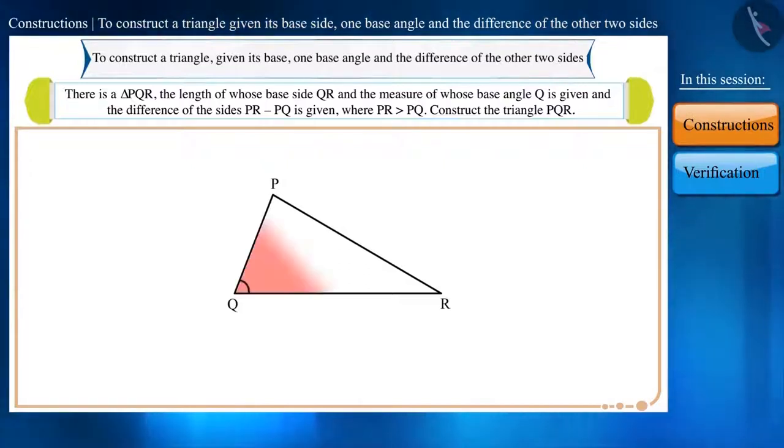Friends, here you can see that side PQ formed on the base angle Q is smaller than the side PR. This is the difference between Case 1 and Case 2. So let's see the steps for construction of a triangle like this.